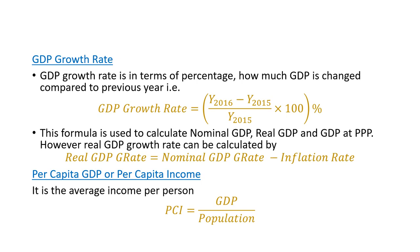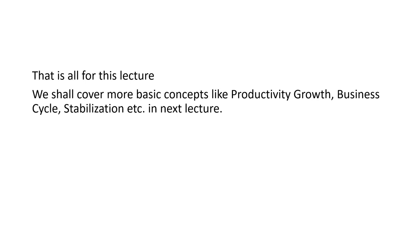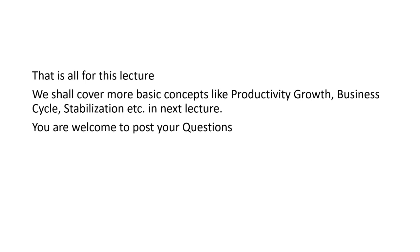Per capita GDP, or per capita income, is the average income per person of an economy. That is all for today's lecture. In the next lecture, we shall introduce ourselves to productivity growth, the business cycle, stabilization policies, and long-run economic growth. You are welcome to post your questions and give your feedback in the comments. Please consider subscribing to the channel. Thank you.